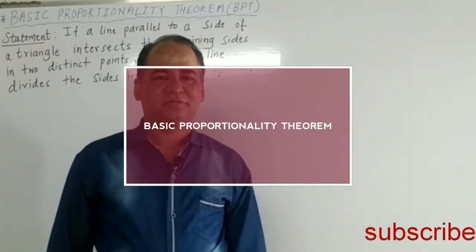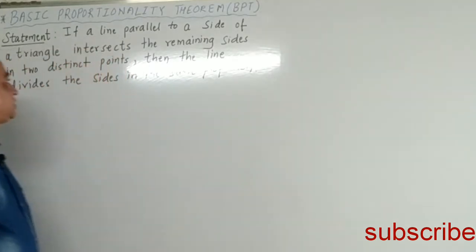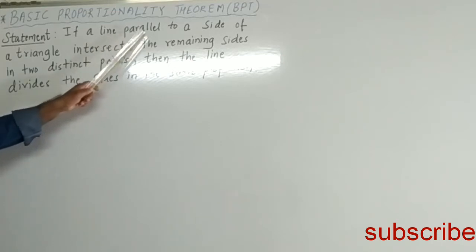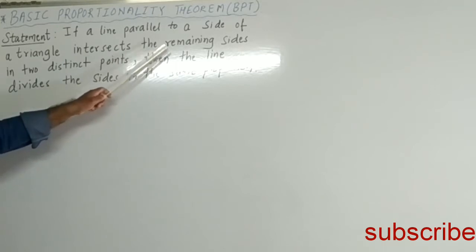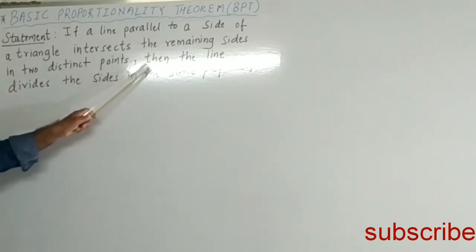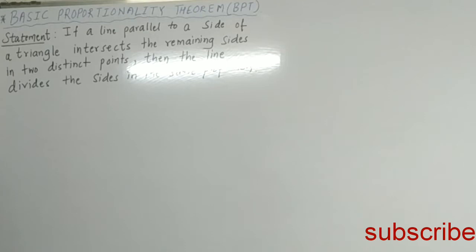Today we will study the Basic Proportionality Theorem. The statement of the theorem is: if a line parallel to a side of a triangle intersects the remaining sides in two distinct points, then the line divides those sides in the same proportion. There are two parts in the statement: the first part is the given part, and the second part is what we need to prove.